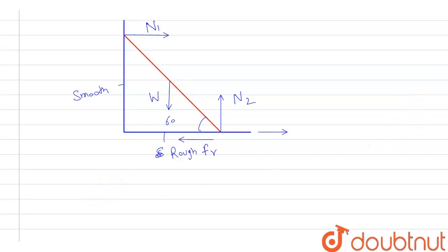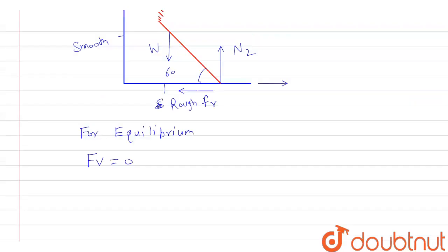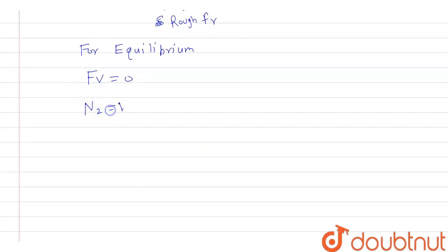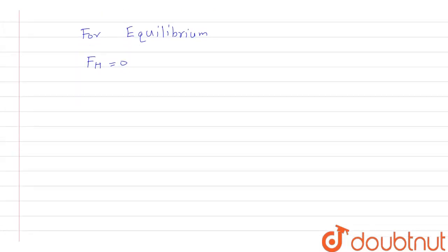For equilibrium, the forces in the vertical direction must equal zero and the forces in the horizontal direction must also equal zero. In the vertical direction, the forces acting are W and N2, so N2 equals W. In the horizontal direction, the forces acting are the friction force fr and N1, so N1 equals fr.